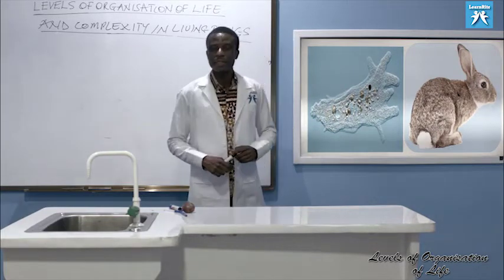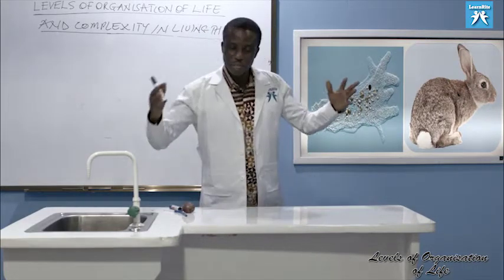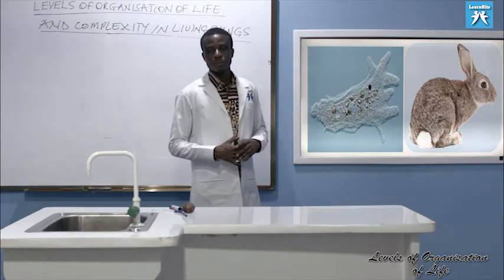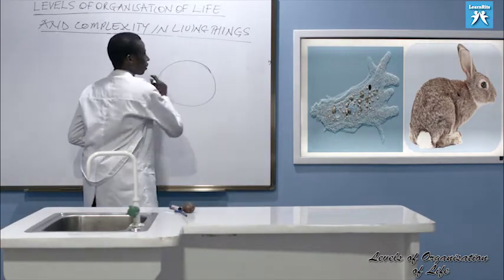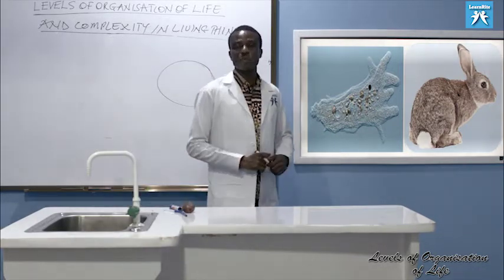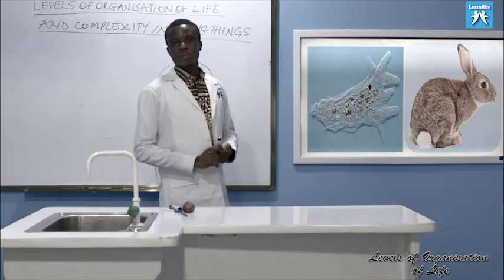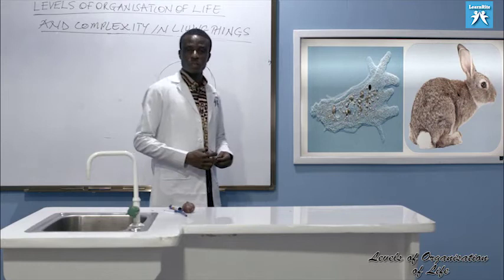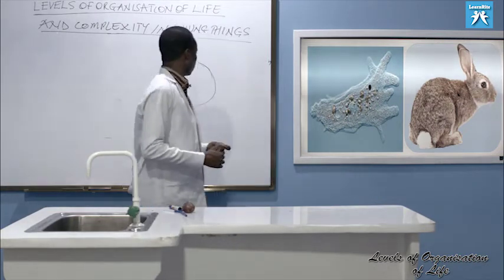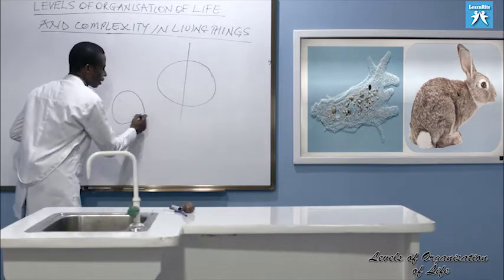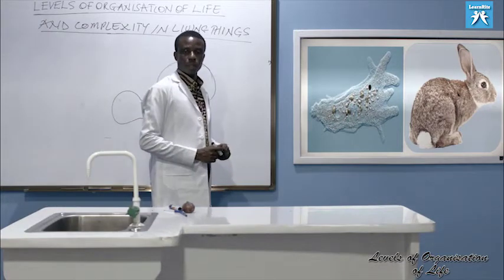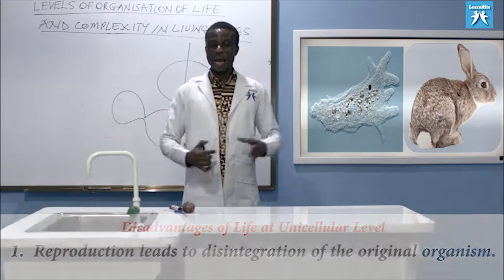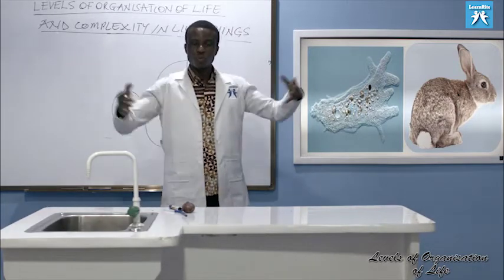Let's look at the disadvantages — not everything is well with the unicellular organism; they have some problems. Assume this is a unicellular organism, like an amoeba. If an amoeba borrows money from you before breakfast, by lunchtime this amoeba has divided — that's how it reproduces, by binary fission. The parent cell does not exist again after reproduction. It leads to disintegration of the original individual. So the amoeba doesn't have a mother; the mother divided into two. That's reproduction leading to the end of the individual.